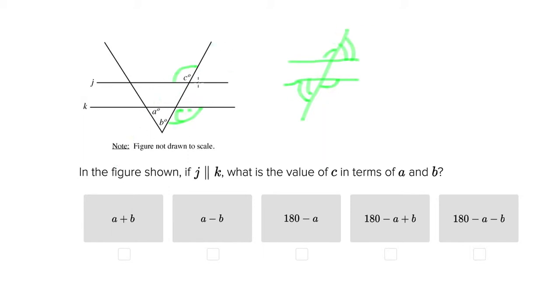So that comes in very handy, the alternate exterior rule. And that's because we're told that J and K are parallel to each other.